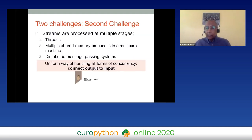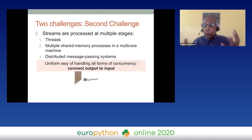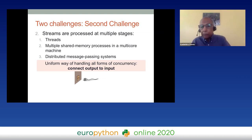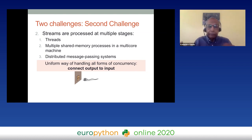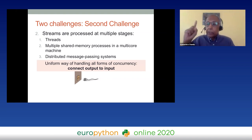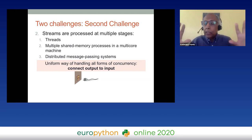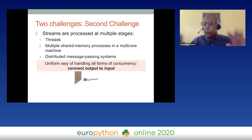Now let's look at the second challenge: we have many different ways to process streams — threads, shared memory, distributed memory — and we want a uniform way of handling all of them. The approach is simple: always connect an output to an input. That's the only way we think about concurrency, whether it's a thread, shared memory, or message passing.